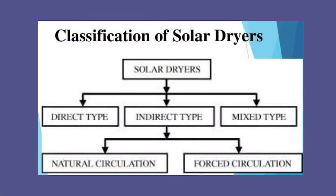Direct type dryers use direct solar radiation. Indirect type dryers use indirect solar energy in the form of heated air. In mixed mode, both direct radiation and heated air are used. These three types are further classified into natural circulation and forced circulation — natural circulation means air flows by buoyancy, while forced circulation uses a fan. Direct type solar dryers expose the substance to direct sunlight. They have a black absorber surface that collects sunlight and converts it into heat, and the substance is placed directly on this surface. These dryers may have enclosures, glass covers, or vents to increase efficiency.